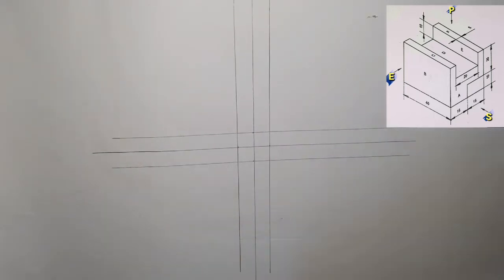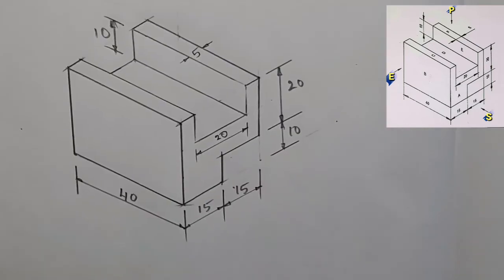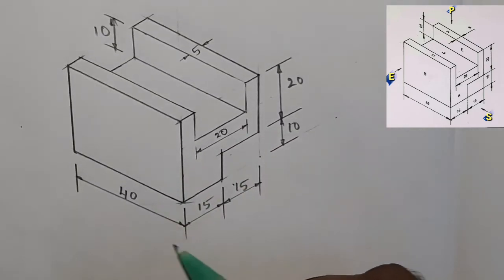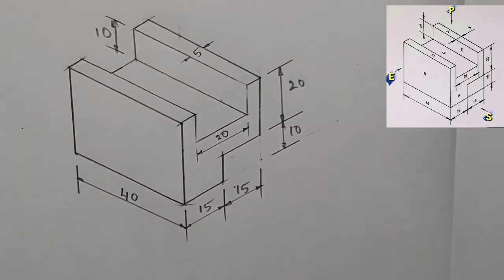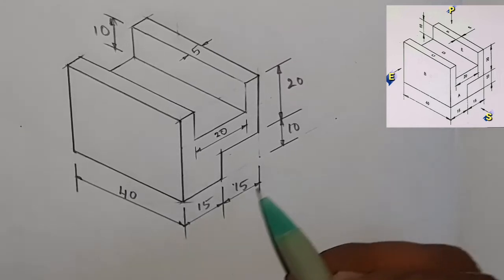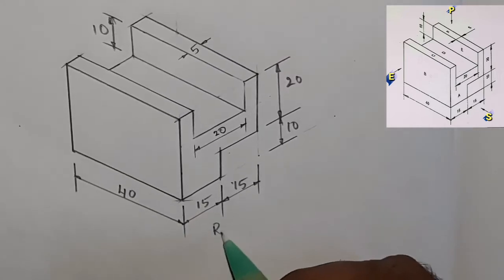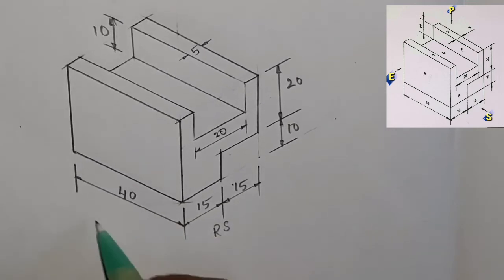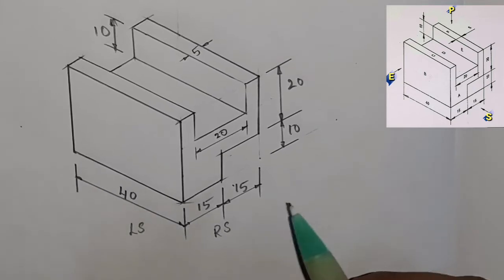First, we are opening the three lines. If we are opening, we will choose the object. First, we are opening the 90 degrees point. There are two points on the right and left. If we are opening the right, we are opening the 30. If we are opening the left, we are opening the 40.